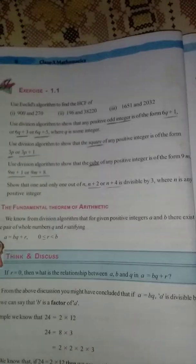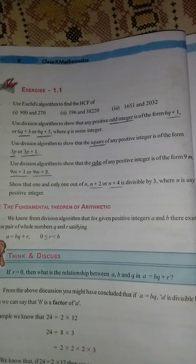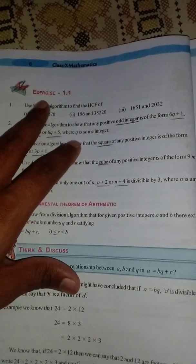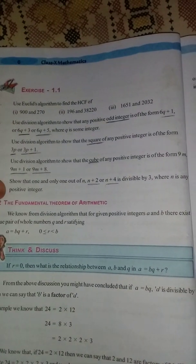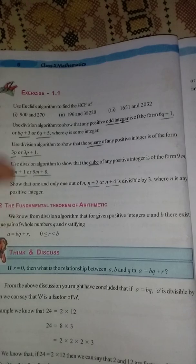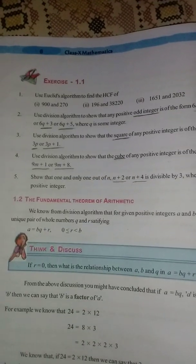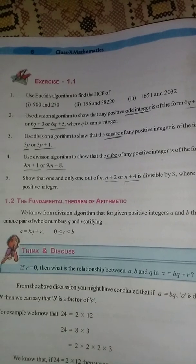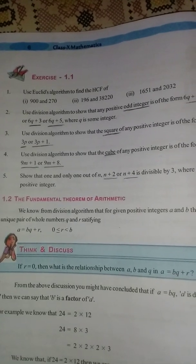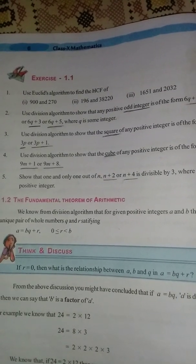Our Exercise 1.1 in the first chapter Real Numbers is completed because in this exercise there are only five questions. All five questions are completed. So in the next video we are discussing the next exercise, 1.2 in Real Numbers. I'm going to end the video. Jai Hind.